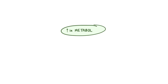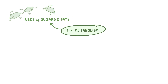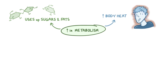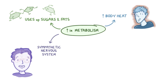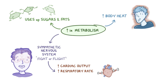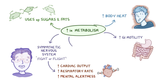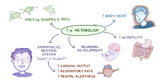This increase in metabolism uses up sugars and fats for energy and produces more body heat. Thyroid hormones also help activate the sympathetic nervous system, which is responsible for the fight-or-flight response. This increases heart rate and cardiac output, respiratory rate, and mental alertness. Thyroid hormones also increase gastrointestinal, or GI, motility, and they are necessary for normal neuronal development in growing fetuses and young children.